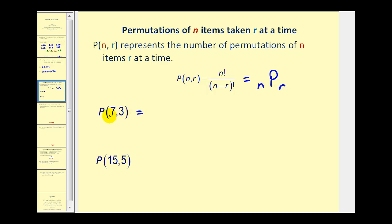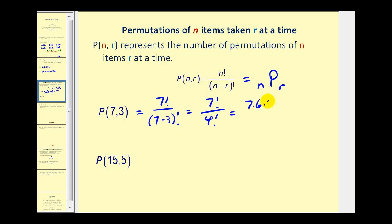So if we want to evaluate the permutation of seven items taken three at a time, it would be seven factorial divided by N minus R factorial — that's seven minus three factorial, which equals seven factorial over four factorial. Expanding this, we have seven times six all the way down to one, over four times three times two times one. This simplifies — four over four is one, three over three is one, and so on — leaving us with seven times six times five, which equals 210.